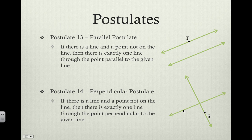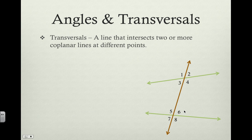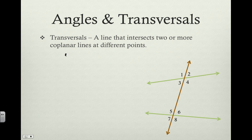Moving on to the next slide, we are going to learn about different types of angles and how they relate to each other and specifically what their names are. A transversal is any line that intersects two or more co-planar lines at different points. We've got two green lines and a brown line that is intersecting the two green lines at different places. This brown line is called a transversal.